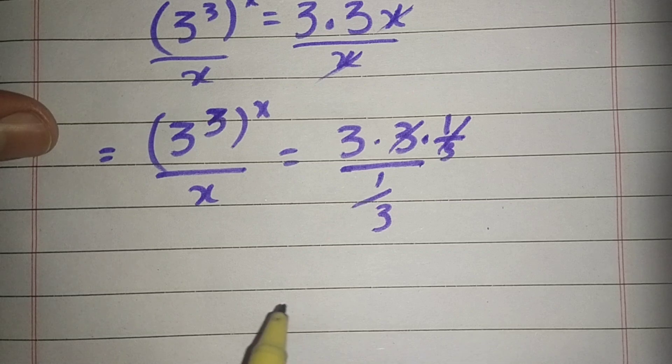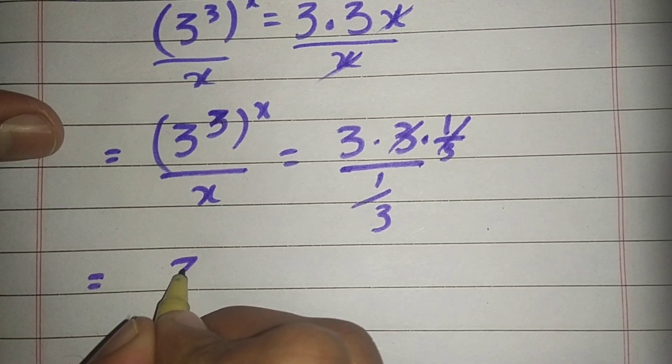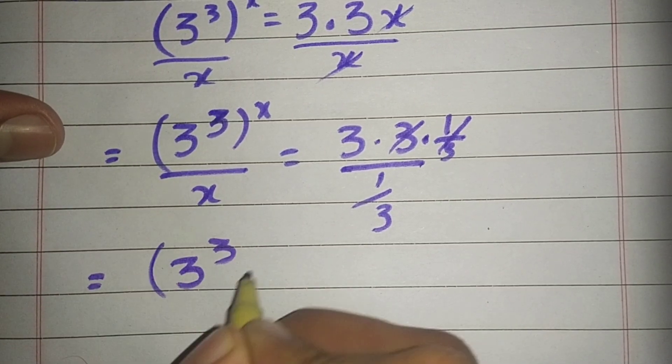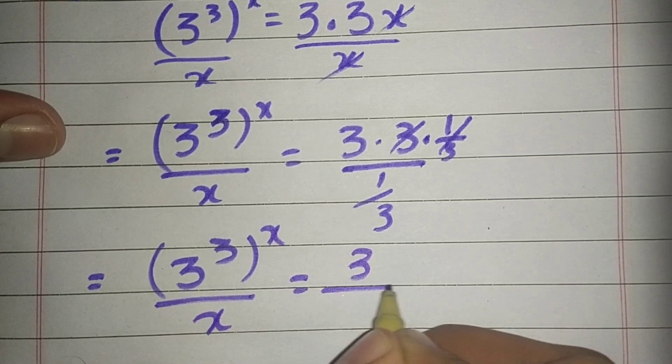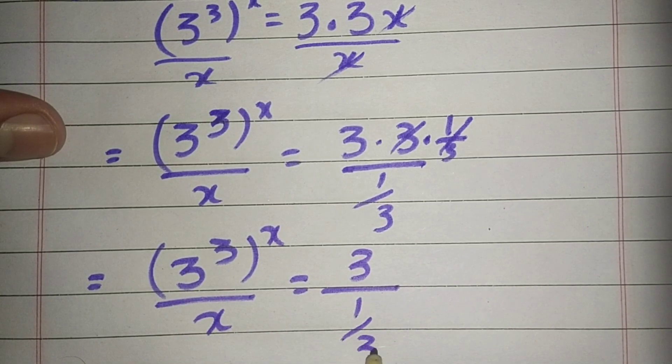This equation becomes 3 power 3 whole power x divided by x is equal to 3 to the power 1 divided by 3.